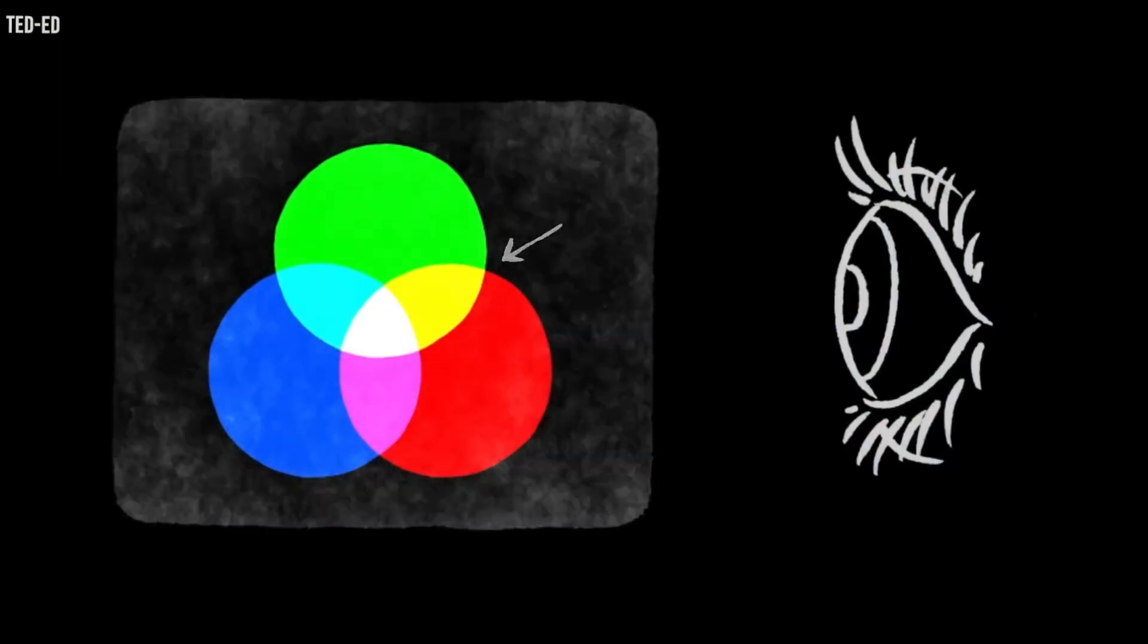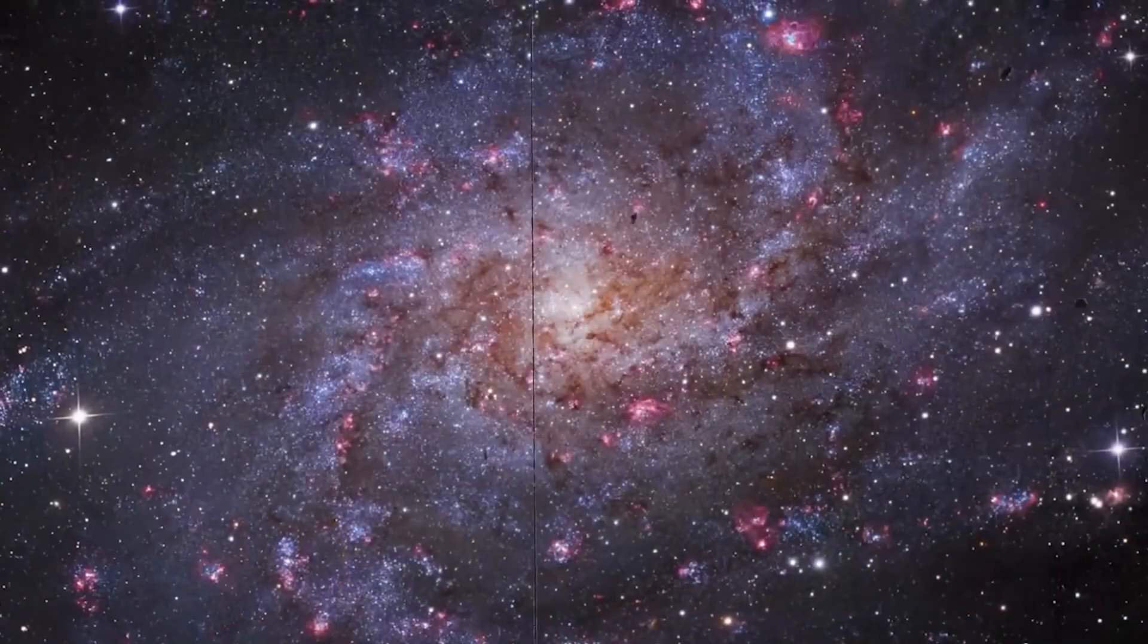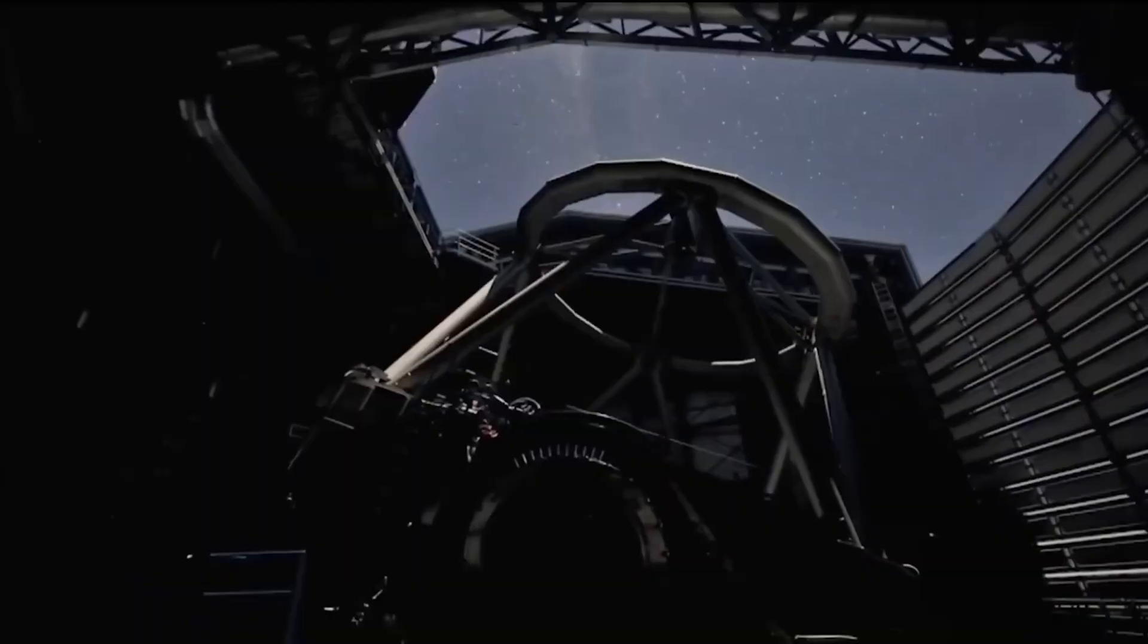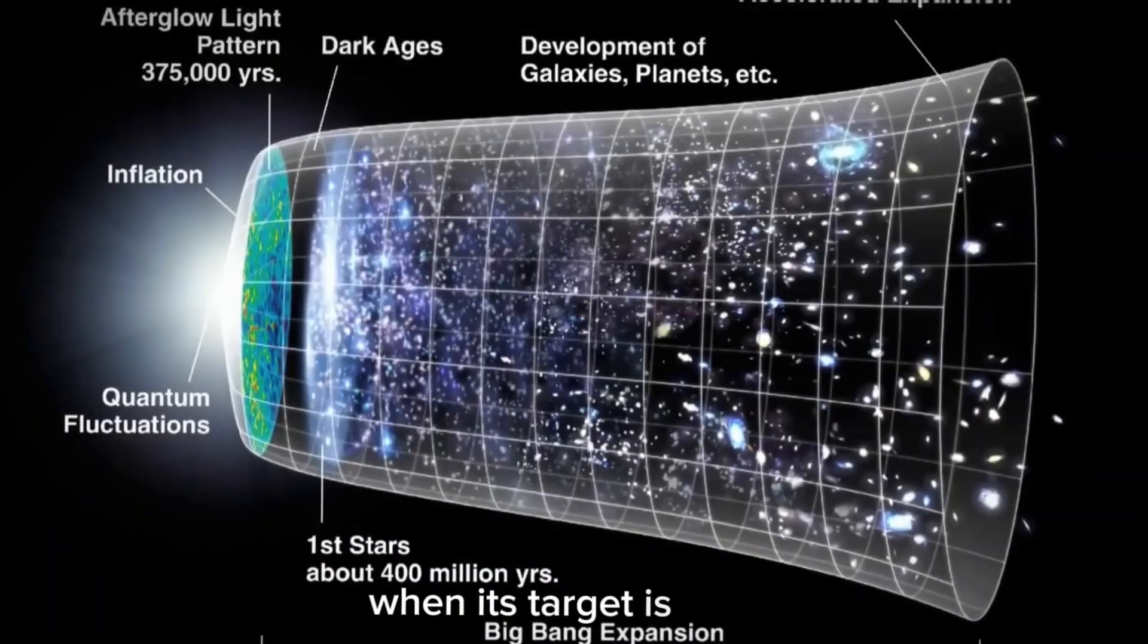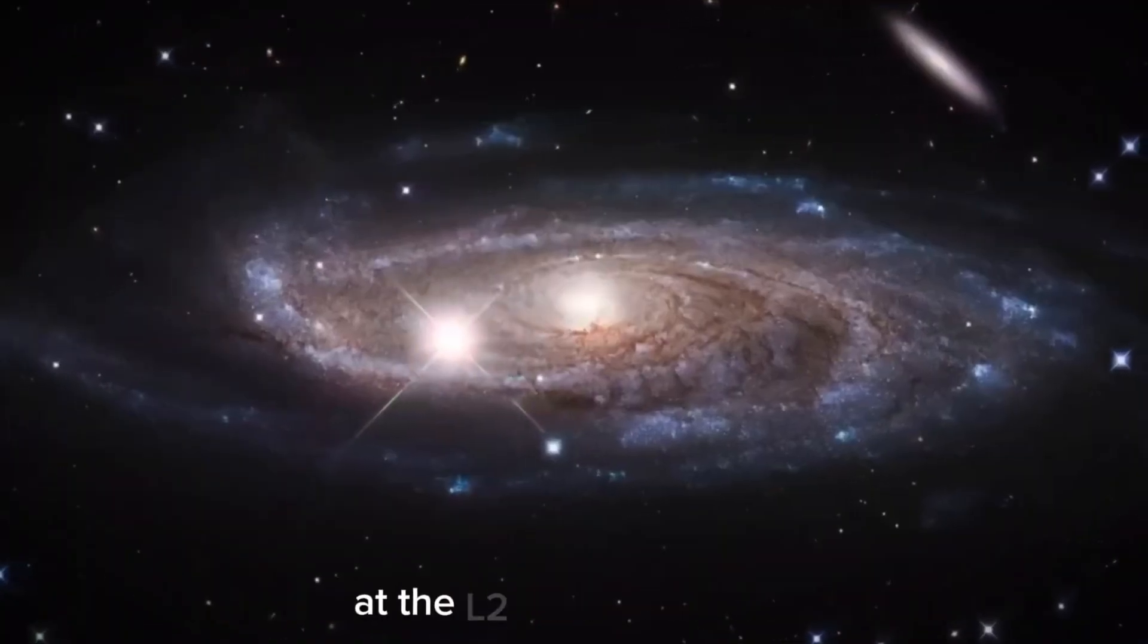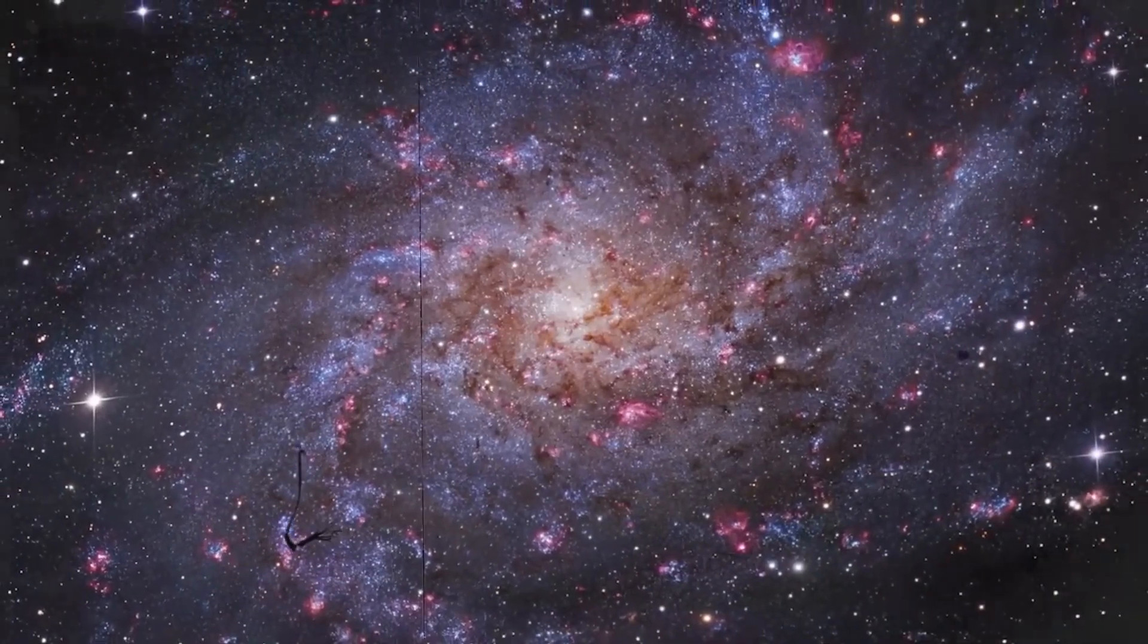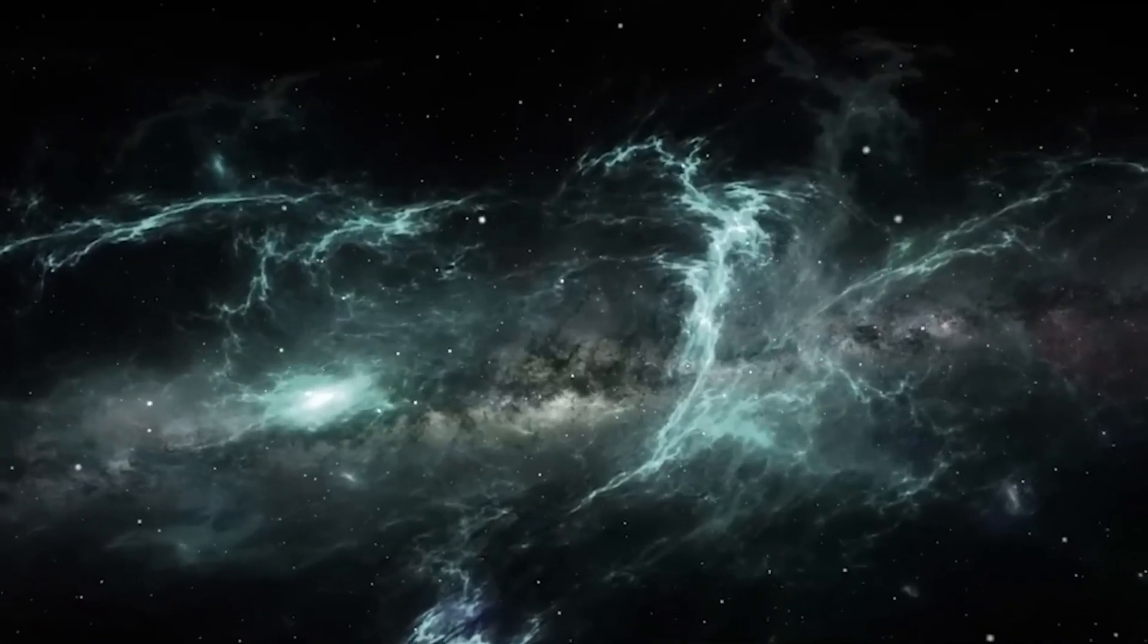However, once that first step occurs, tearing apart structures on scales of about 20 million light years, everything else proceeds rather quickly. Dark energy needs to strengthen tremendously to start overcoming the immense force of gravity, and once it can do so for the most loosely bound structures, we're talking only hundreds of millions of years before all of the galaxies are torn out of their home groups and clusters. Then it's only tens of millions of years until stars are ripped out of their individual galaxies. Next, it's only a few months until the outer planets are ripped away from their parent stars, and weeks before the inner planets suffer the same fate.